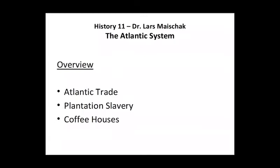There are three parts to this Atlantic system that I want to separate. Trade is one thing — that is how things get shipped from one place to another. Slavery is the mode of production by which the goods that fuel the system are produced on plantations in the New World. And then finally, coffee houses — that's the distribution and consumption end of the system in Europe, the places where people go to buy these plantation goods.